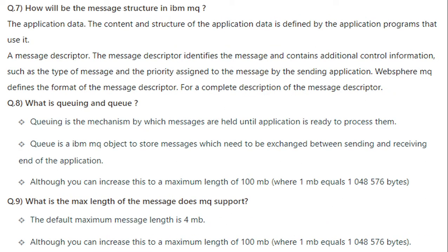How will the message structure be in IBM MQ? A message has two parts: the application data, whose content and structure is defined by the application program that uses it; and a message descriptor, which identifies the message and contains additional control information such as the type of message and the priority assigned to it by the sending application. WebSphere MQ defines the format of the message descriptor.